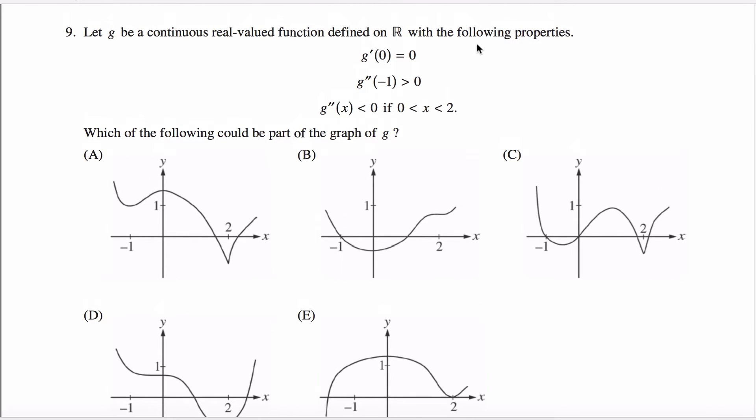So what I like to do on these to keep track of things is write my options up here: A, B, C, D, E, and then sort of check things off as I go.